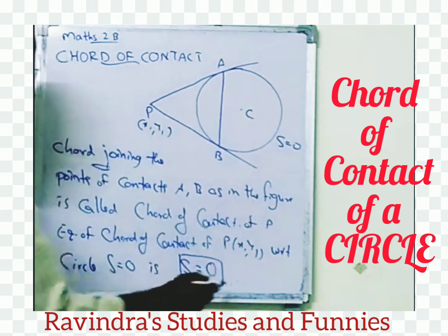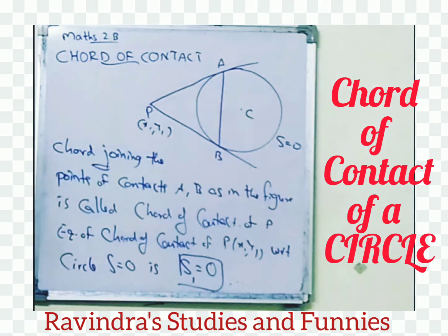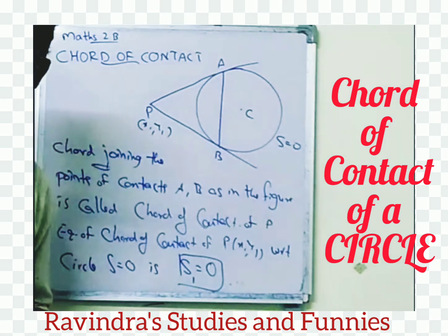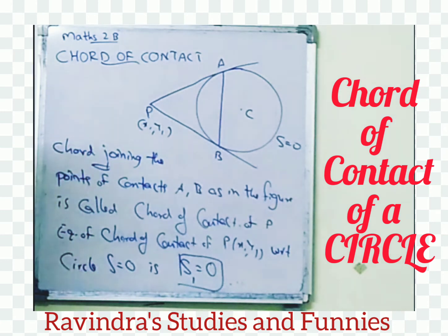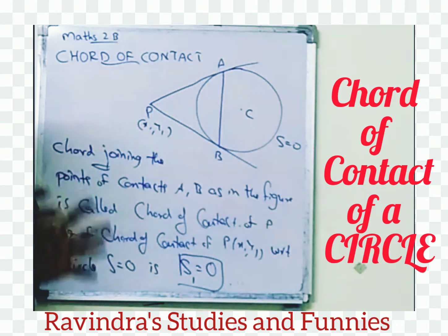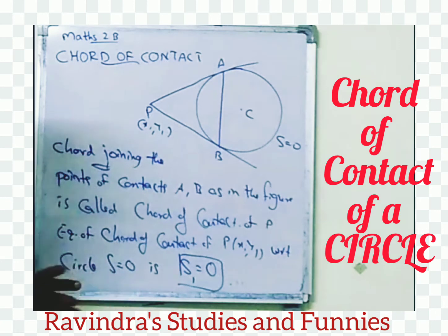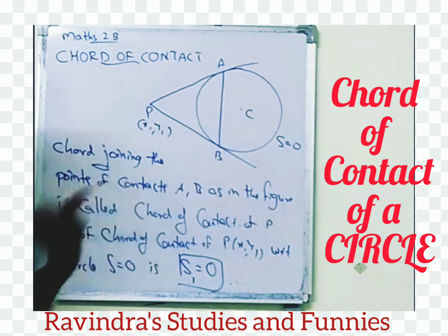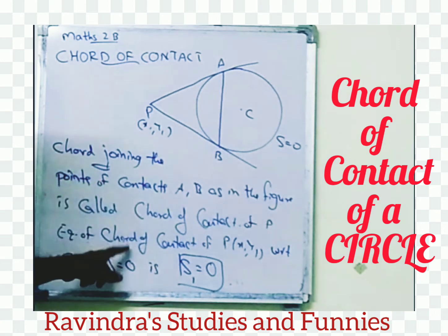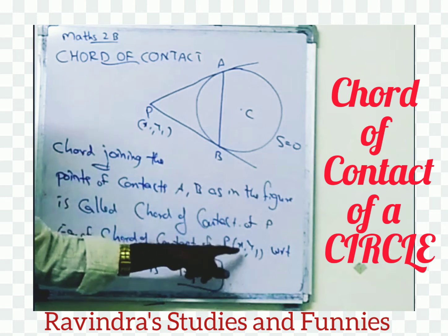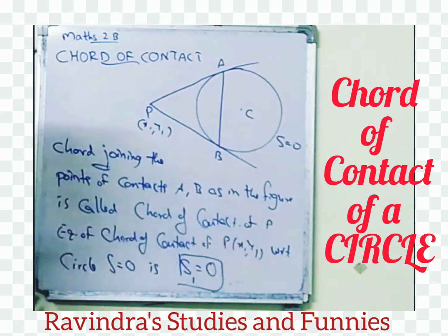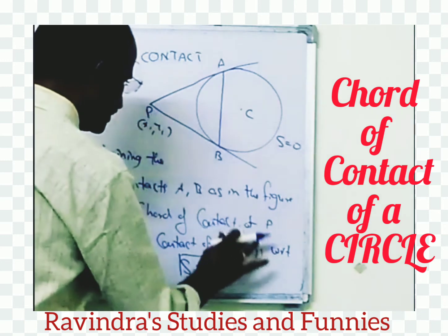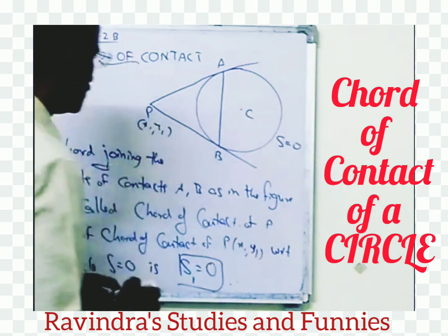Now, for the second time you are getting this equation. Previously also, we got this formula for finding the equation of tangent. The equation of tangent at P(x1, y1) to the circle s equal to 0 — there also the formula is s1 equal to 0. Here also, the equation of chord of contact of P(x1, y1) with respect to circle s equal to 0 is s1 equal to 0.